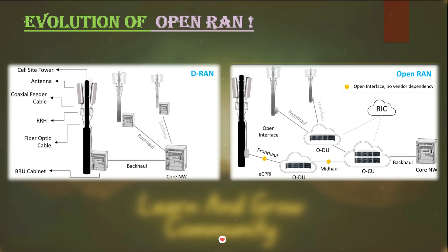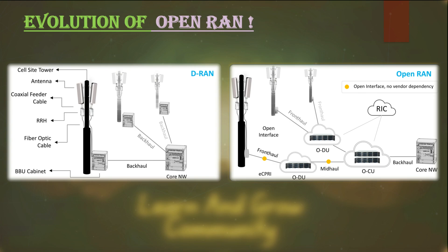Now coming to the evolved RAN part — here we take the general reference of 5G NR (5G New Radio), also called 5G RAN. We can see the DU (Distributed Unit) and the CU (Centralized Unit). These are the two main parts that act like a single BBU unit in the traditional RAN system. These two units can be split and placed at two different positions in the site, based on the type of BBU units, similar to what is done in traditional RAN systems.